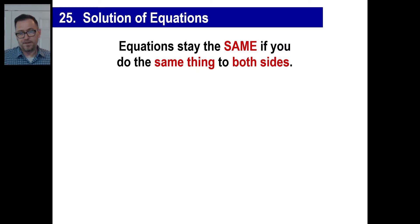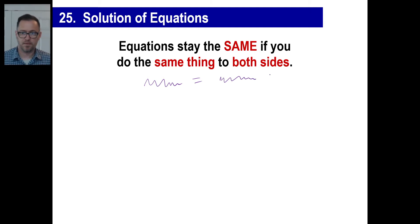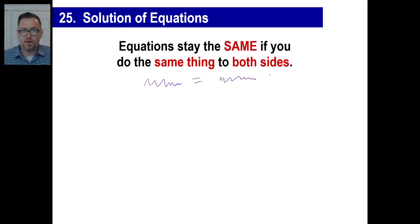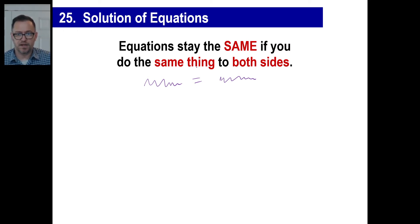One thing to remember: this is an equation — blah blah equals blah blah and so on. Equations stay the same if you do the same thing to both sides. When you see that equals sign, that means all this on one side is the same as all that on the other side.